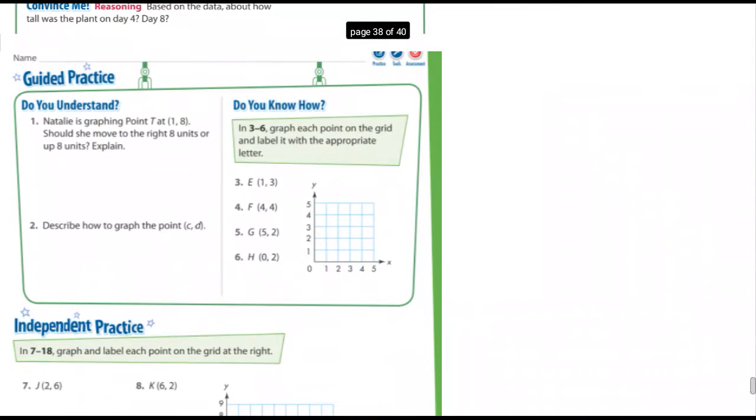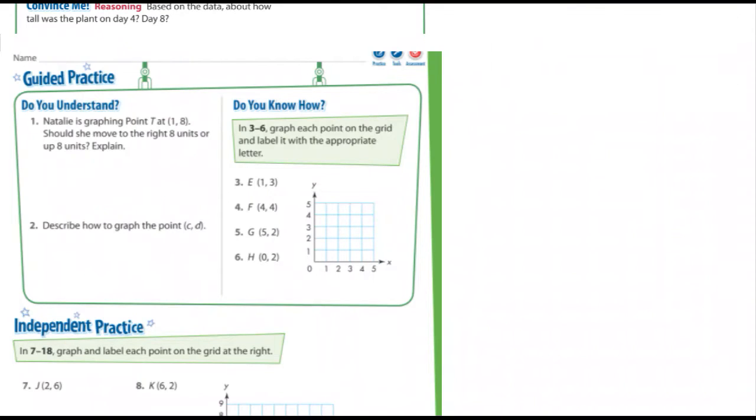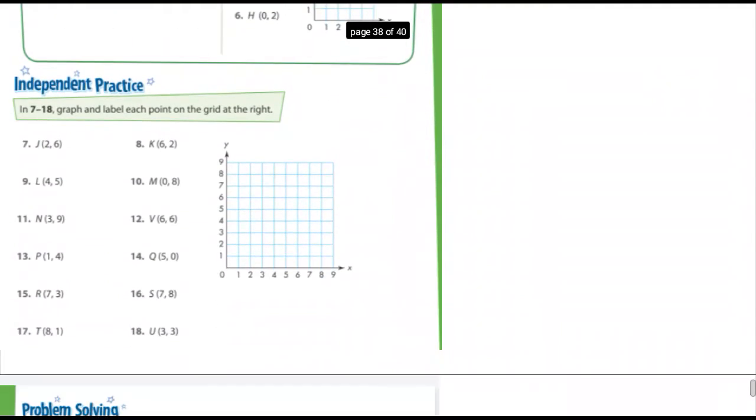Let's look at the guided practice here. Natalie is graphing a point, point T at 1, 8 on a graph. Let me cut this out so we have a graph we can look at. I'm hoping this will... Actually, that graph won't work. It's too small. I need a bigger graph.